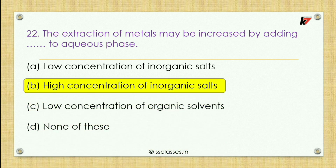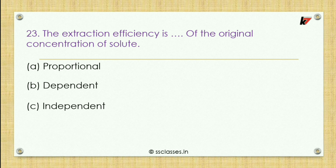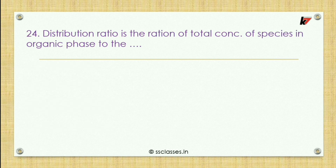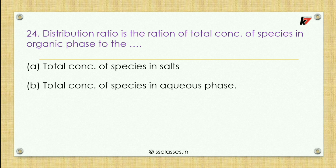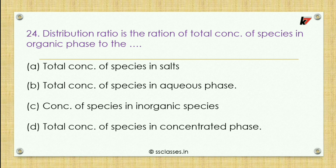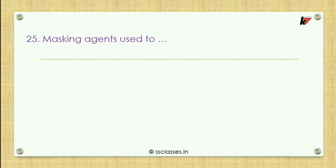Twenty-third question: extraction efficiency is independent of the original concentration of solid — options: proportional, dependent, independent, or none of these. The correct answer is independent of original concentration of solid. Twenty-fourth question: distribution ratio is the ratio of total concentration of species in organic phase to what? Options include total concentration in aqueous phase. The correct answer is option B — total concentration of species in aqueous phase.